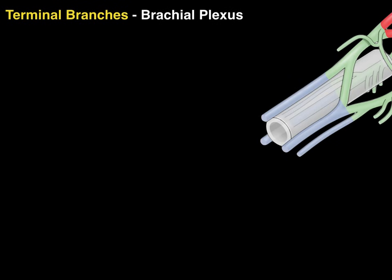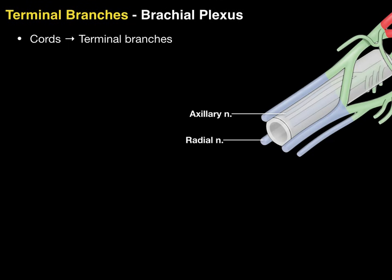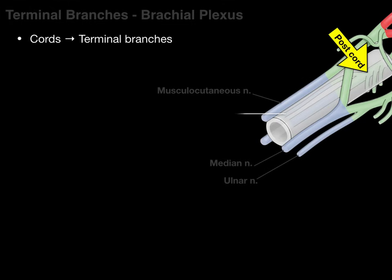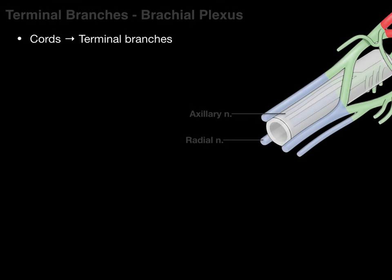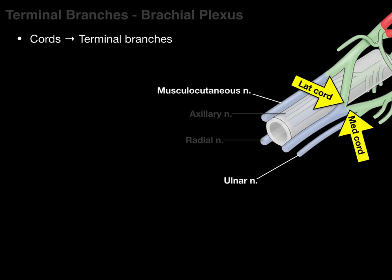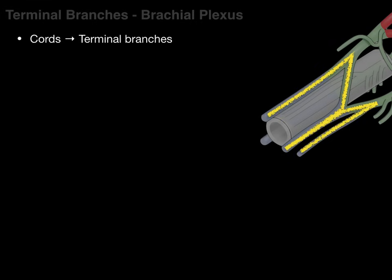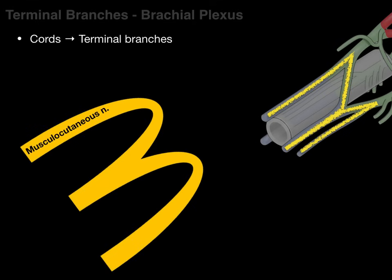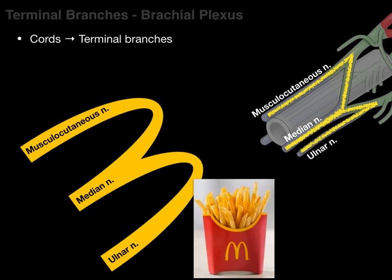Now let's talk about the terminal branches of the brachial plexus. The terminal branches are derived from the cords. The axillary and radial nerves come from the posterior cord. The lateral cord gives rise primarily to the musculocutaneous nerve. The medial cord goes primarily to the ulnar nerve. Together, the lateral and medial cords give rise to the median nerve. When you look at this, it kind of looks like an M — the golden arches — with the musculocutaneous, median, and ulnar nerves. I actually use that golden arches M when dissecting to find the brachial plexus.